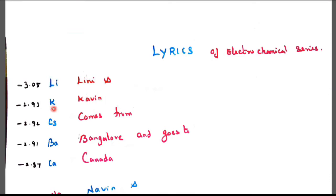Lithium, Lini, Potassium, Kavin, Cesium comes from Barium, Bangalore and Calcium, Canada. Lini and Kavin comes from Bangalore and goes to Canada.